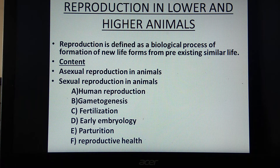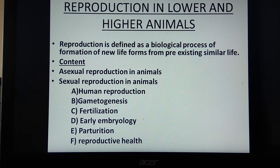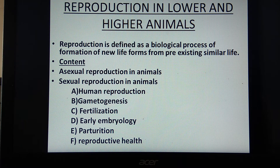Today we are going to start with the topic reproduction in lower and higher animals. First of all we will see what is reproduction. Reproduction is defined as a biological process of formation of new life forms from pre-existing similar life. Formation of new life forms means the progeny which are formed, and pre-existing life form means the parents. In the process of reproduction, parents give birth to the young ones.